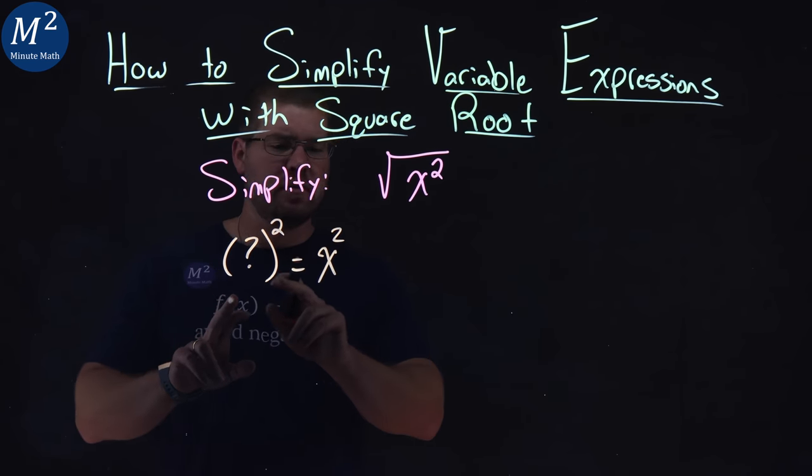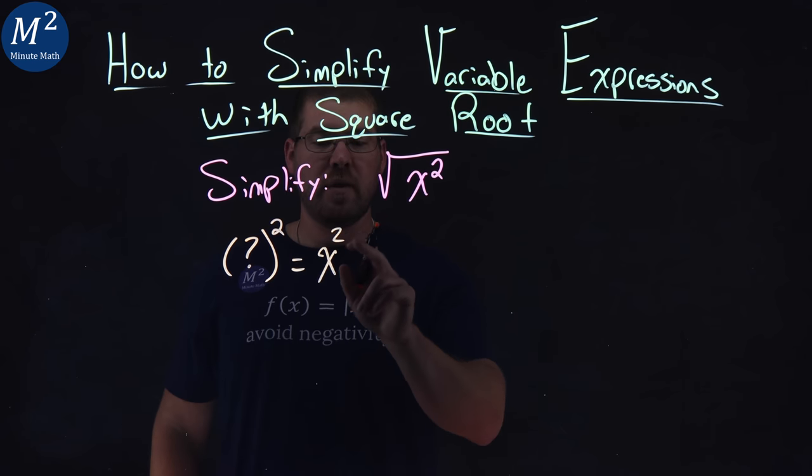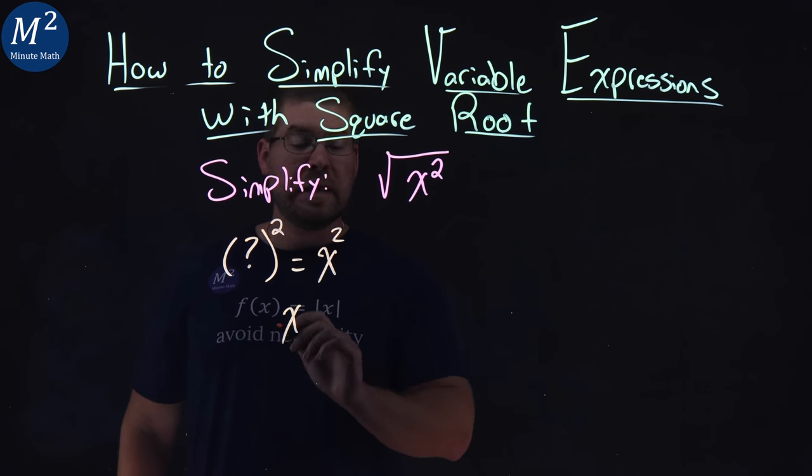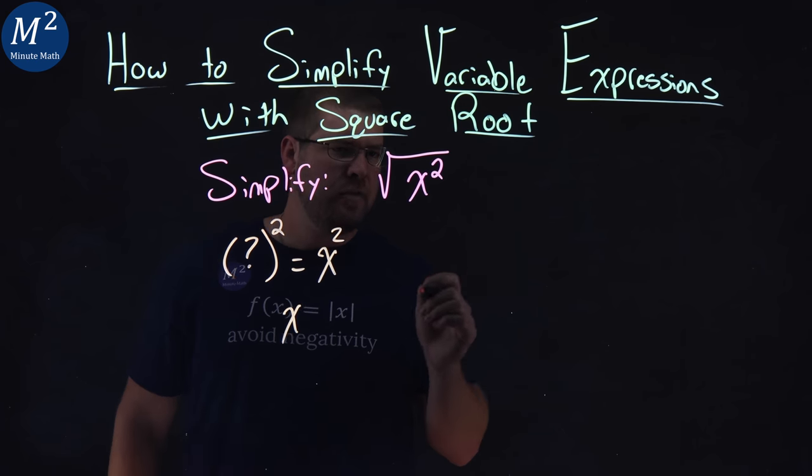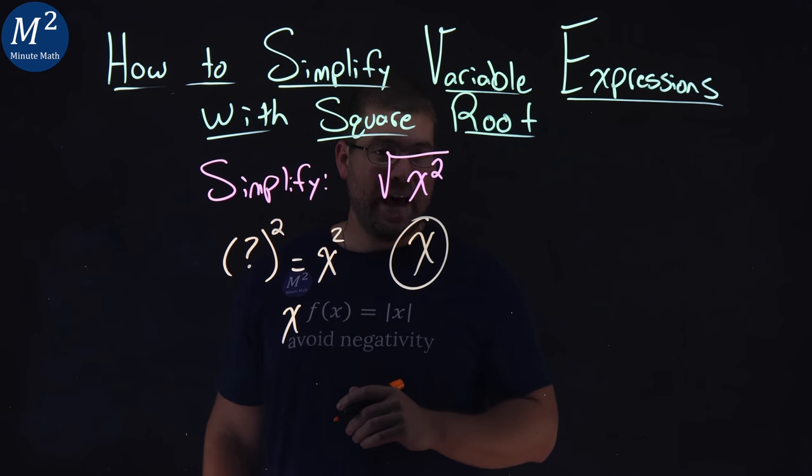Well, that becomes a little clearer here, right? What number, all squared, gives me what's inside the square root, x squared? That's going to be an x. So we know the square root of x squared is just x.